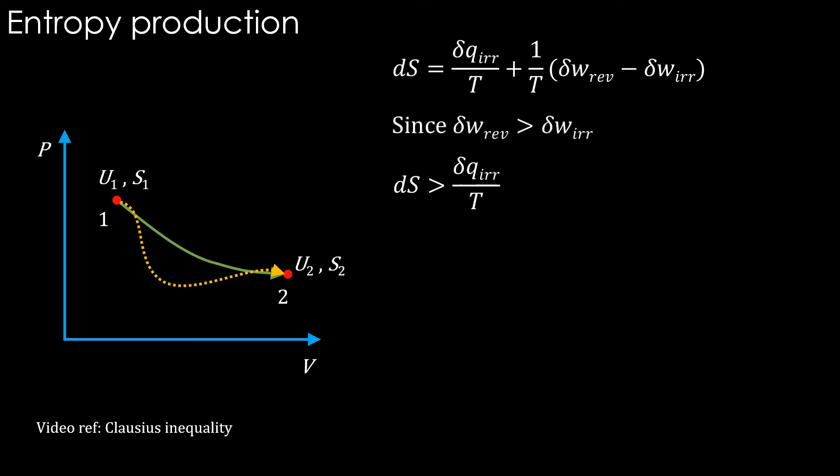Since the work done in reversible case is more, the ds term is greater than delta Q irreversible divided by T. We can write ds equals delta Q irreversible divided by T with a positive additional term. This is ds sub gen to indicate entropy generated or entropy produced.